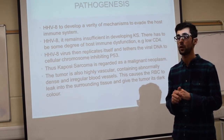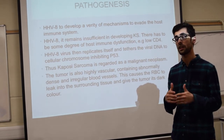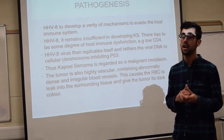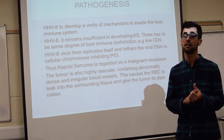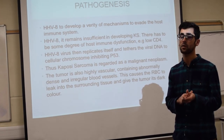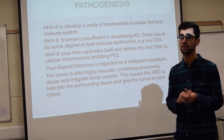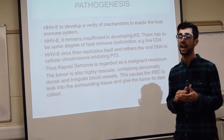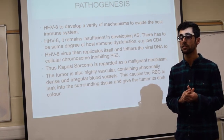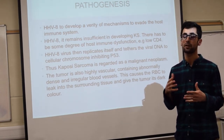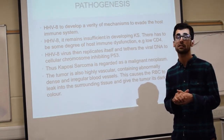The viral DNA tethers to the host's cellular chromosome, which will inhibit P53, a tumor suppressor gene. Thus Kaposi's sarcoma is regarded as a malignant neoplasia. The cancerous cells elongate and are known as spindle cells, which form slits containing red blood cells. As the tumor is highly vascular and contains abnormally dense and irregular blood vessels, this causes red blood cells to leak into the surrounding tissue, giving the tumor its dark color.